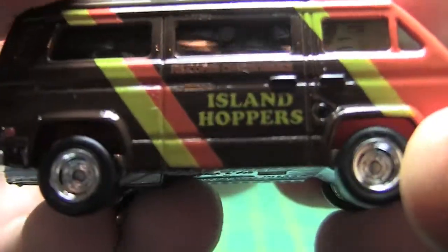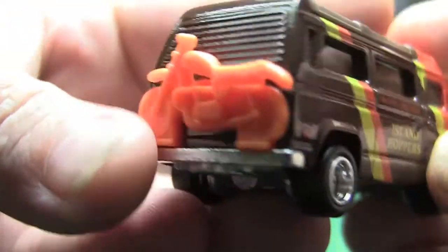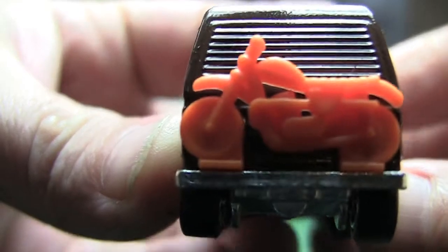Got some nice little details on it. Got an Island Hopper, got your little motorcycle on the back, just all orange.